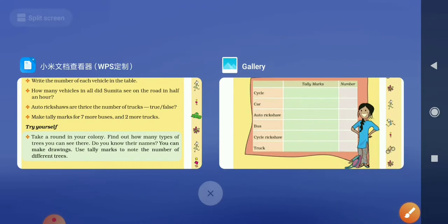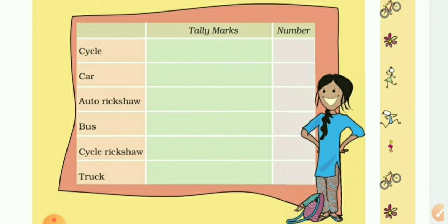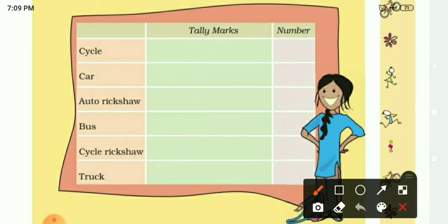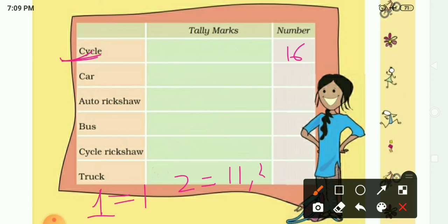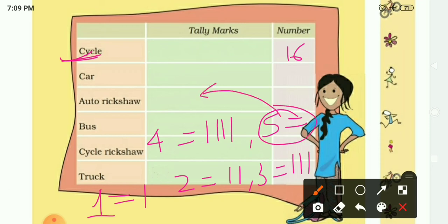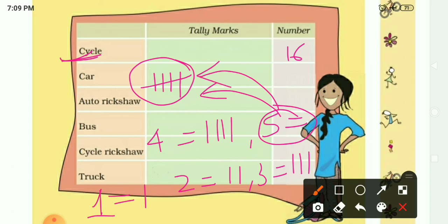Now there is one more way to represent tally marks. For example, take cycles with the number 16. In this alternative method: for 1 put one straight vertical line, for 2 put two vertical lines, for 3 put three vertical lines, for 4 put four vertical lines. For 5, put four vertical lines and one cross line through them — that represents five. Remember this.